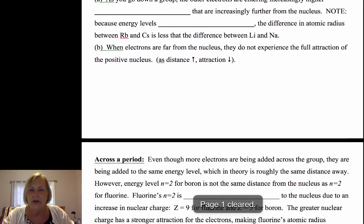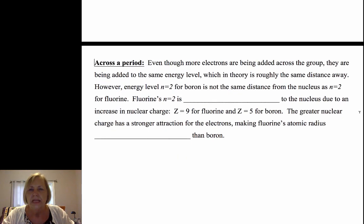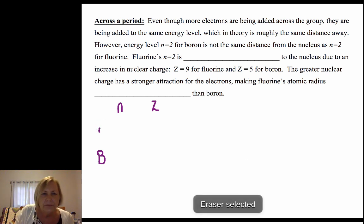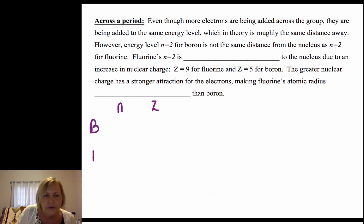What about across a period? Remember I said if you're comparing two elements, you want to look at their n value. If I had elements a and b, you want to look at their n value and then you also want to look at their nuclear charge. In this one, I want us to compare boron and fluorine.